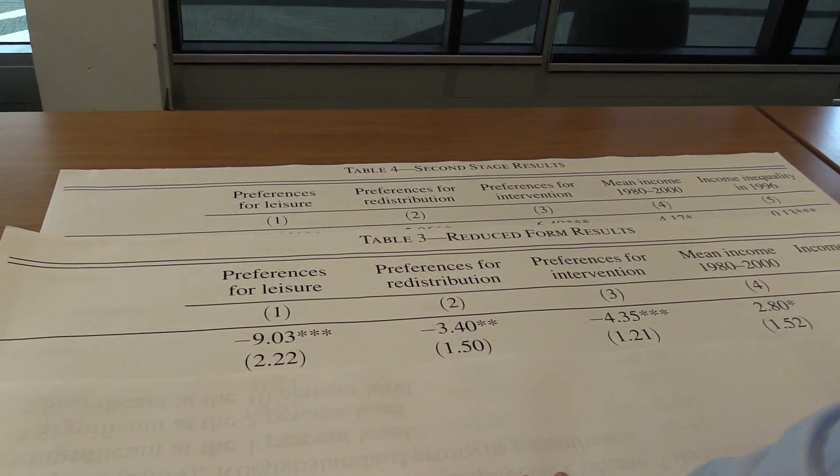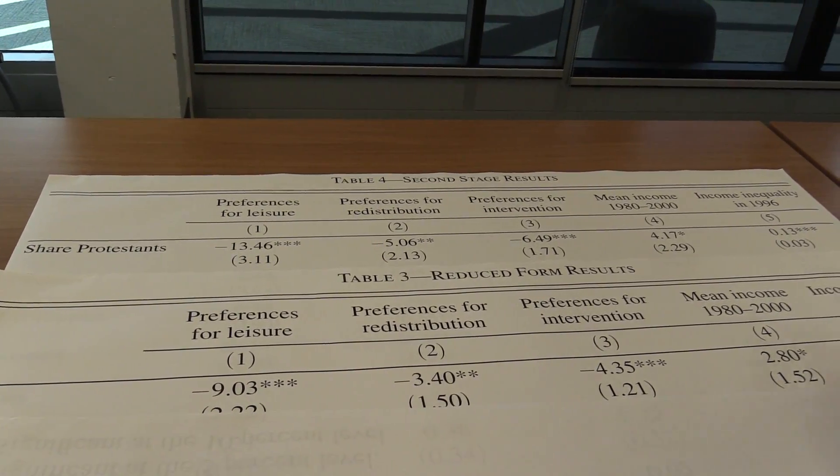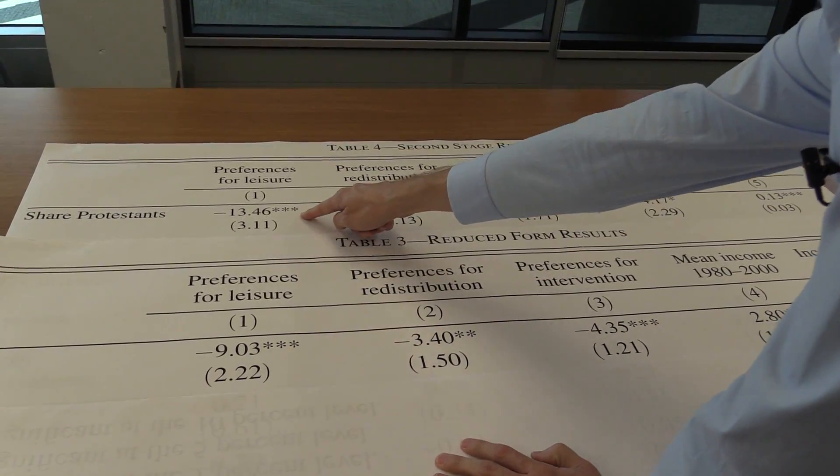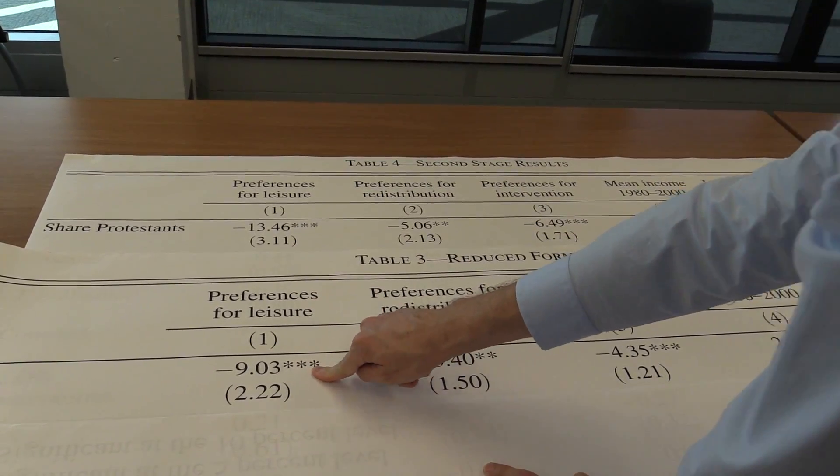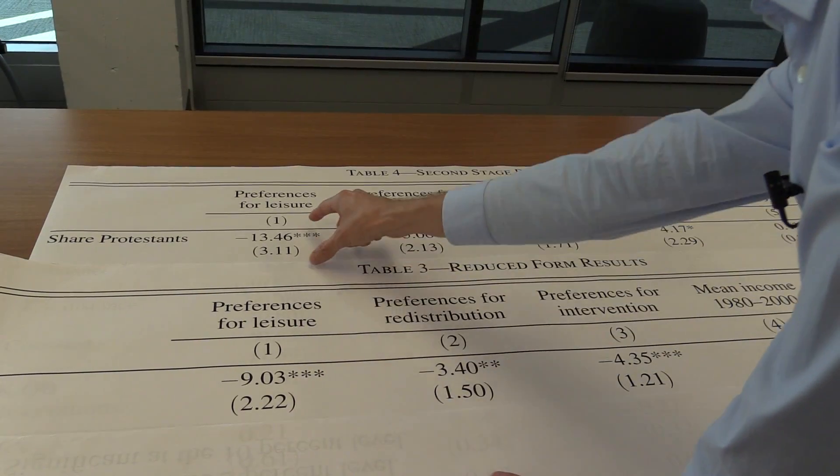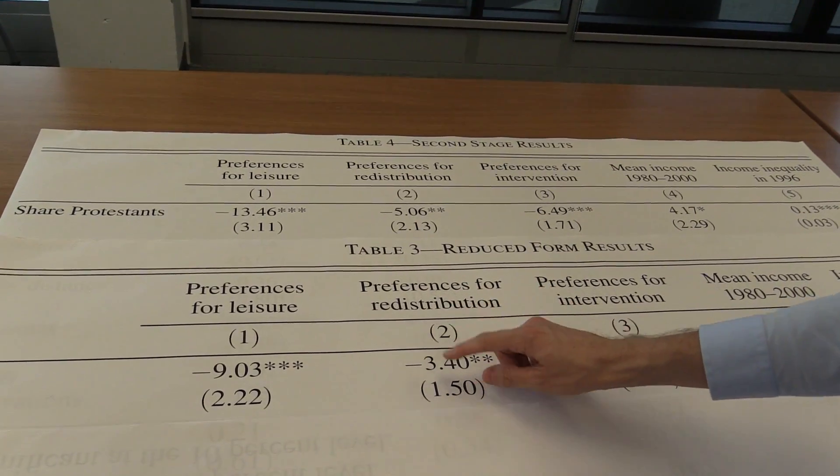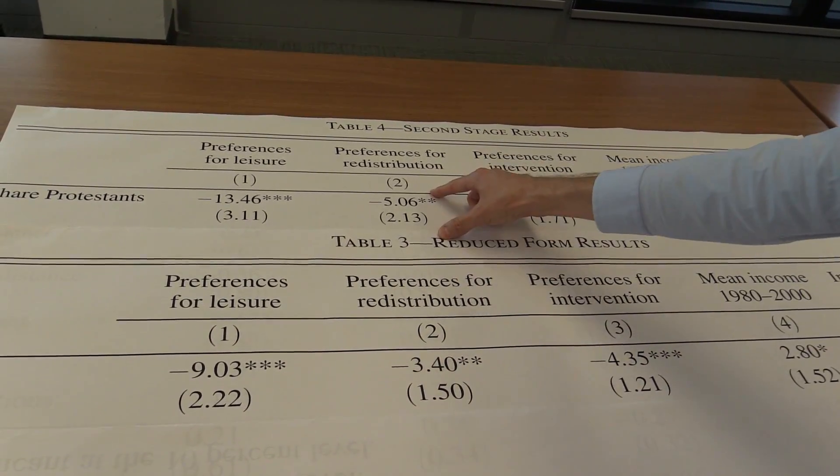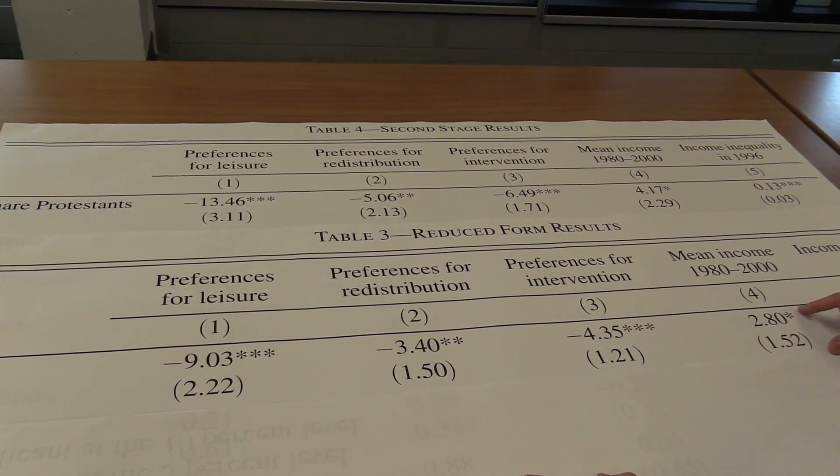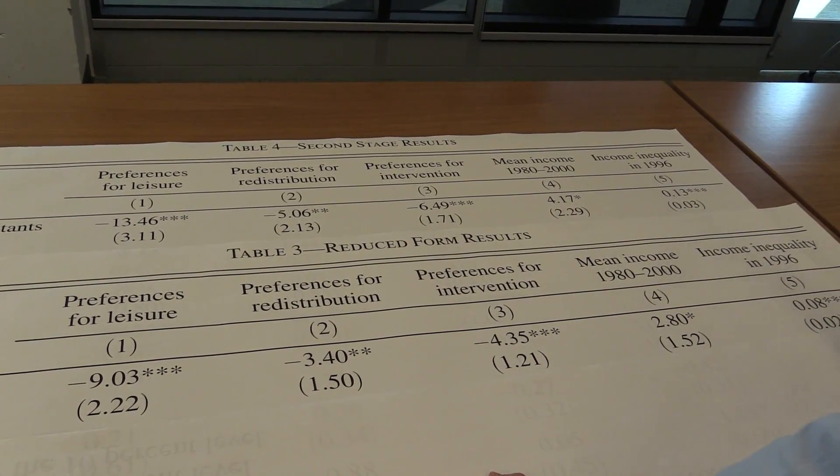Now we can do the same thing for all the other outcome variables. So here is our original table that had the intention to treat problems. And now let's compare it to the second stage results using two-stage least squares. So this is the comparison we just saw. We saw that once we adjusted for this non-compliance problem, the preference for leisure causal effect increased, went from minus 9 to minus 13. The same thing happens for the other outcome variables. For redistribution, it goes from minus 3.4 up to minus 5. Intervention, minus 4 up to minus 6. Mean income, 2 up to 4. And income inequality, 0.08 up to 0.13.